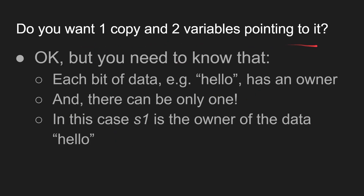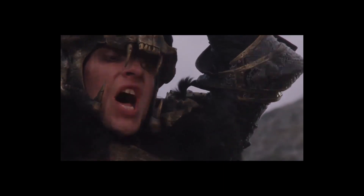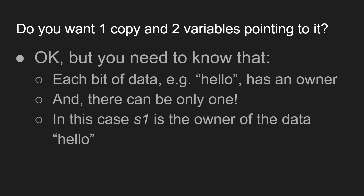But if you want one copy and two variables pointing to it, Rust says you can do that — but there are some conditions. These conditions exist because Rust wants to be memory safe. First of all, each piece of data, like the word hello, has an owner. When there is something in memory, someone has to own it. And there can only be one owner. You can't have two variables owning a piece of memory. In our case, S1 is the owner of this piece of data with the word hello in it.